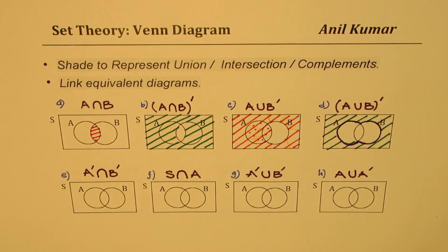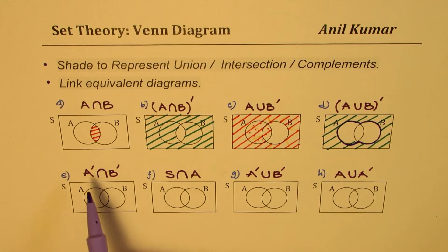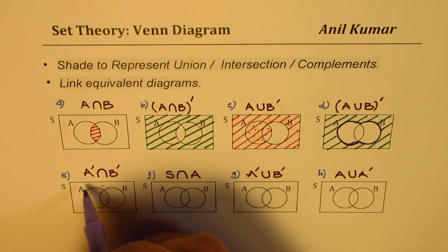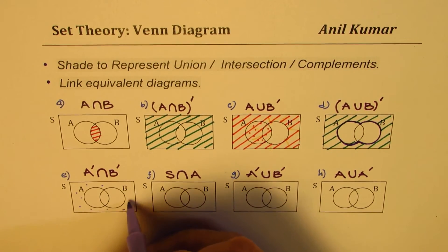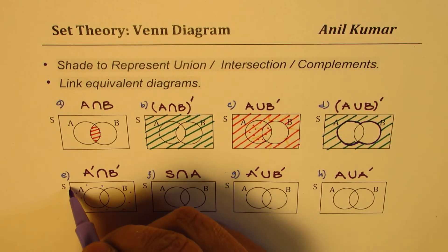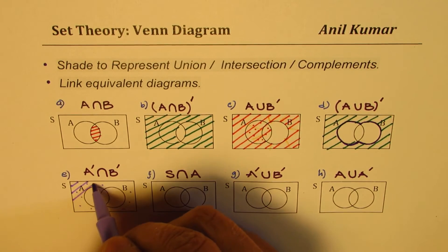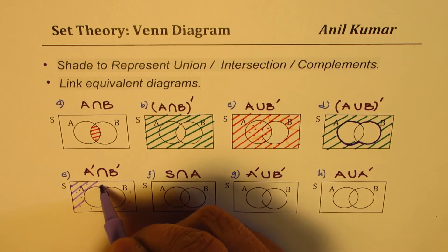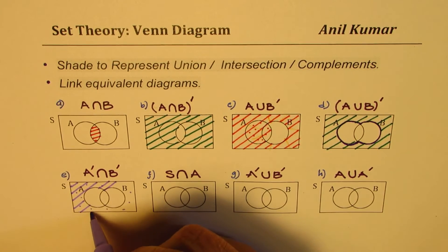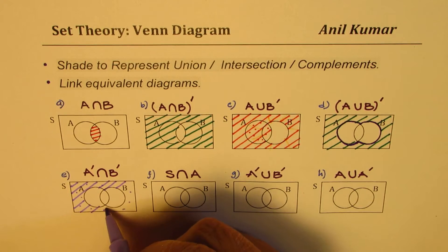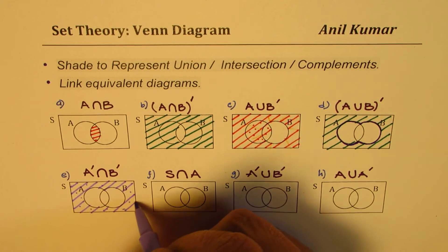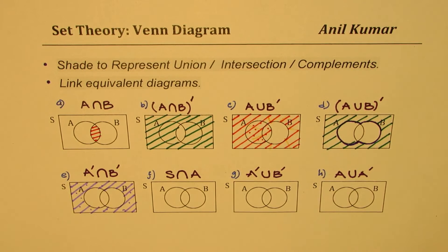Let's look into the next one, which is very interesting. We need to find the intersection of not-A and not-B, that is A'∩B'. That means everything which is outside both A and B. So let's shade that region — it is the area outside both circles. That is the intersection of not-A and not-B.